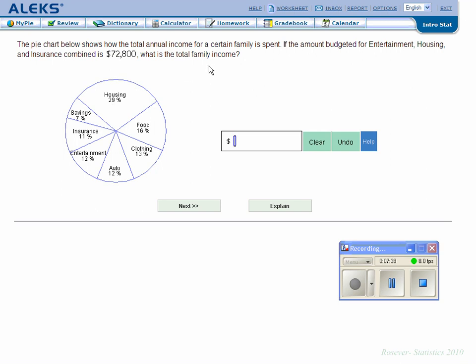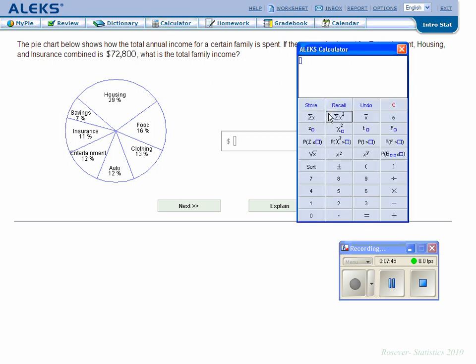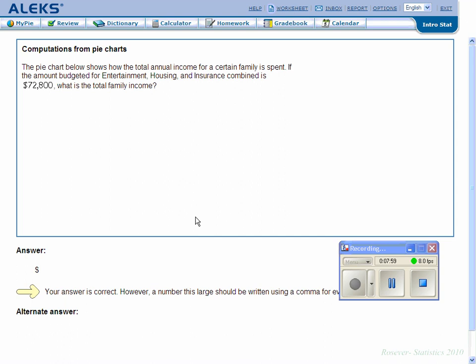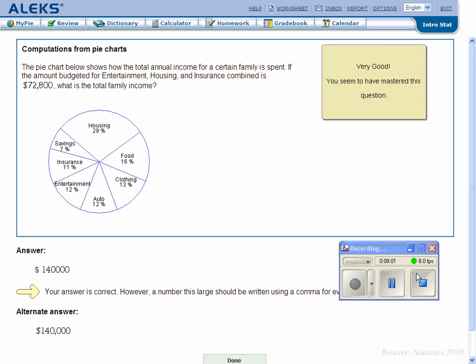What's the total family income? We're going to divide that $72,800 by 0.52. $72,800 divided by 0.52 is $140,000. Clear that, close that, $140,000. That's it, that's how it's done. We've had enough of that. Thanks for stopping by.